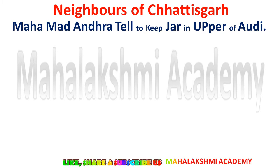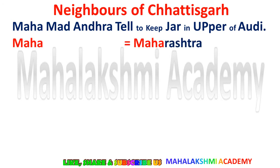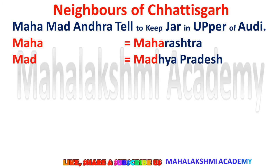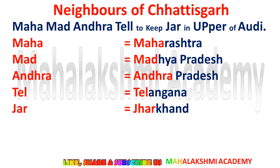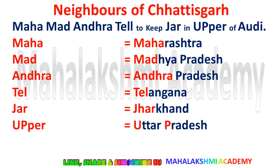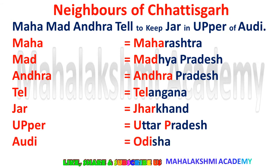Here is how the trick works: Maha is for Maharashtra, Mad is for Madhya Pradesh, Andrey is for Andhra Pradesh, Tel is for Telangana, Jaar is for Jharkhand, Appar (U.P.) is for Uttar Pradesh, and Odi is for Odisha. These are the regions which are sharing boundaries with Chhattisgarh.